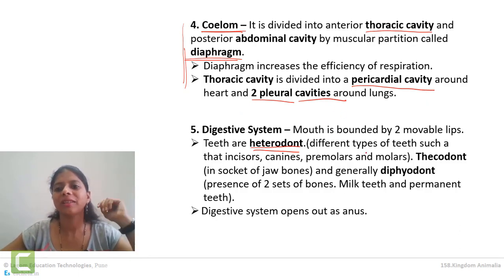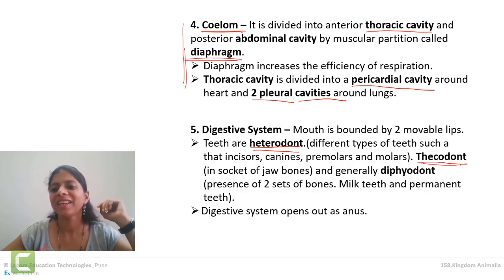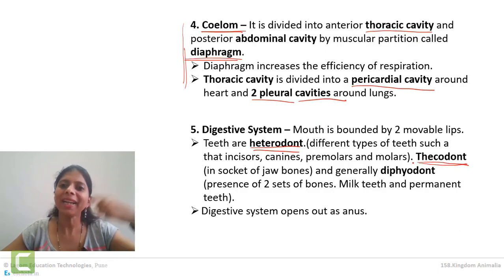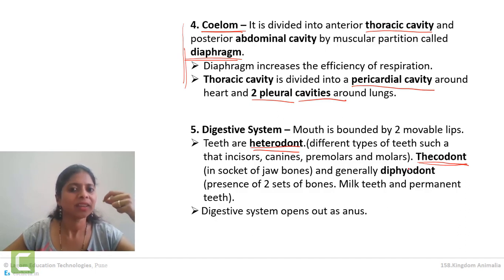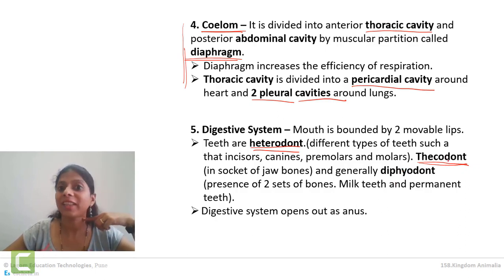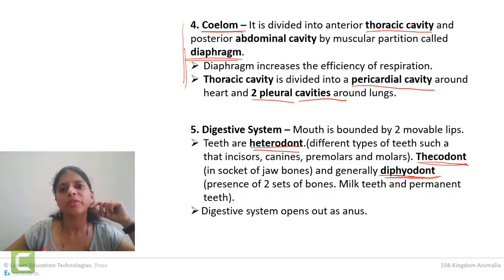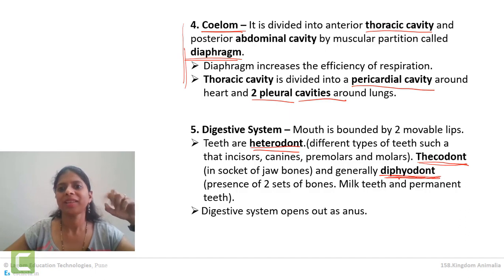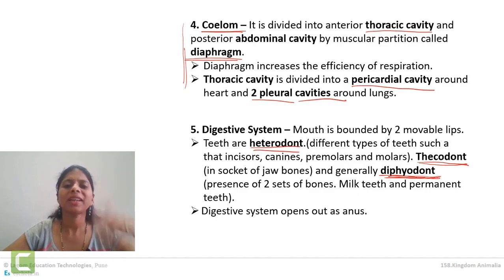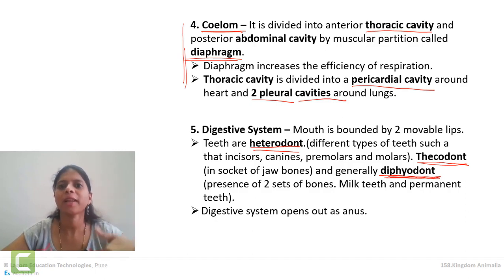Another term for mammalian teeth is diphyodont — meaning we get teeth two times. When we are kids we have milk teeth. When we reach 10, 12, or 13 years of age, milk teeth fall off and permanent teeth come. Teeth come twice in the lifespan of a human being — that's why they are called diphyodont. In contrast, sharks are polyphyodont — they can get new teeth many times throughout their lifetime. But humans and most other mammals get teeth only twice.